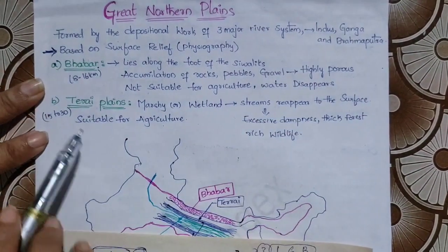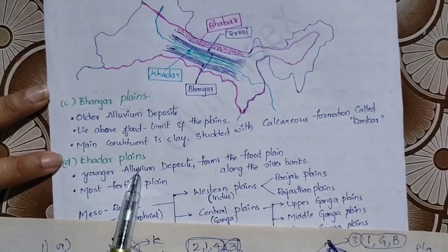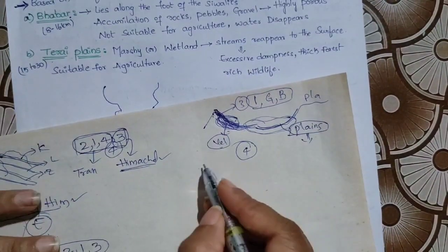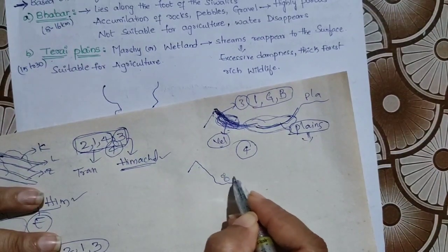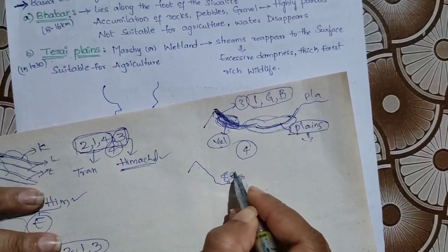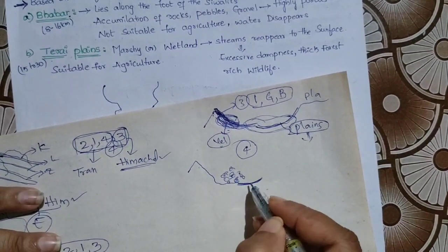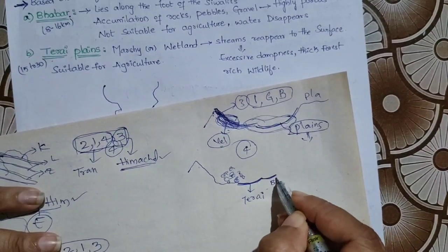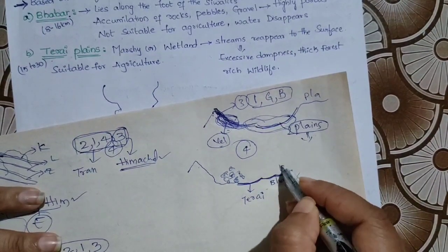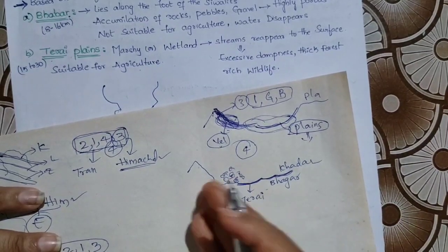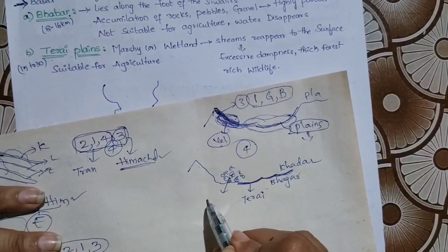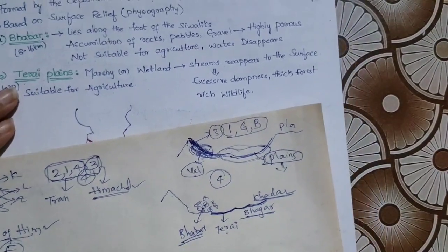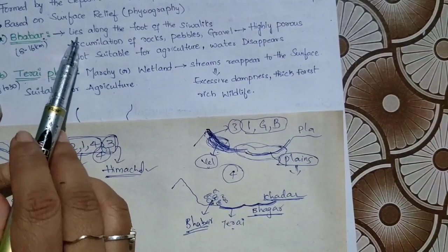Based on surface relief or physiography, the plains are divided mainly into four parts: first, Bhabar; second, Terai; third, Bhangar; and fourth, Khadar. If you see the diagram, near the hills we have the Bhabar zone with pebbles, then Terai, then Bhangar, and then Khadar.